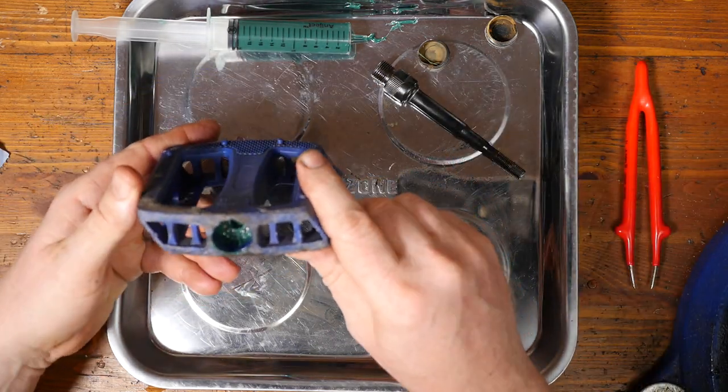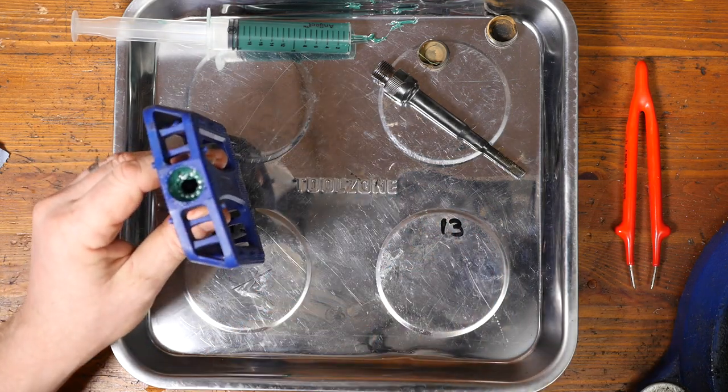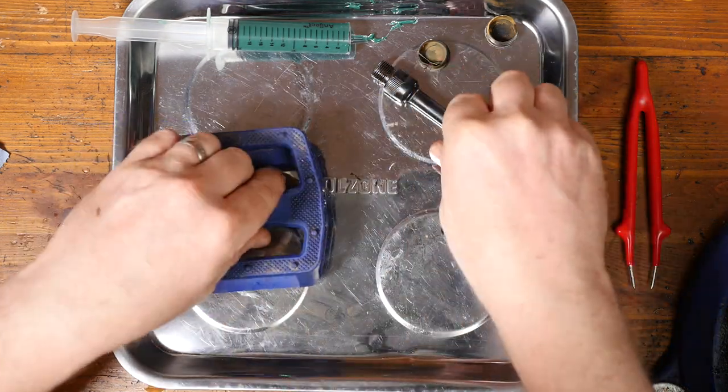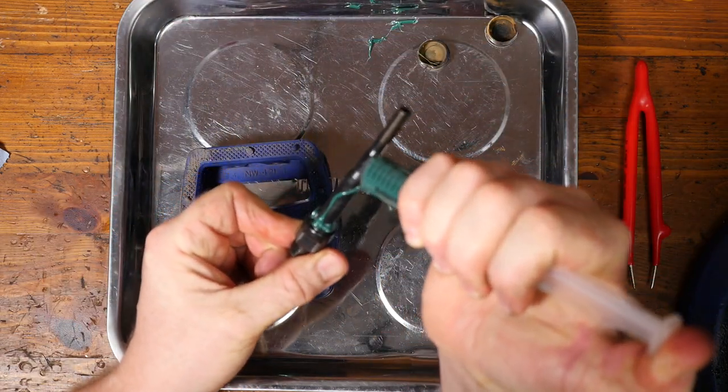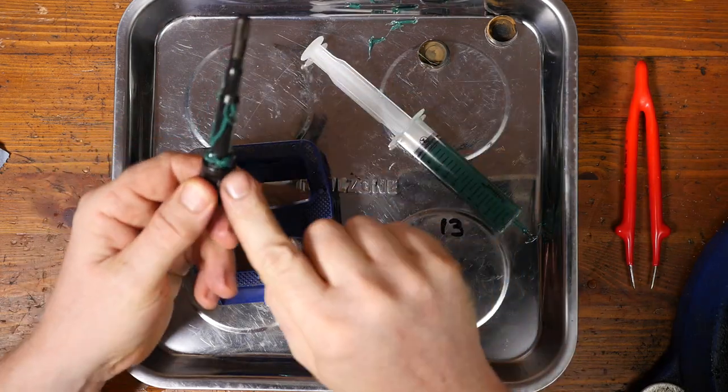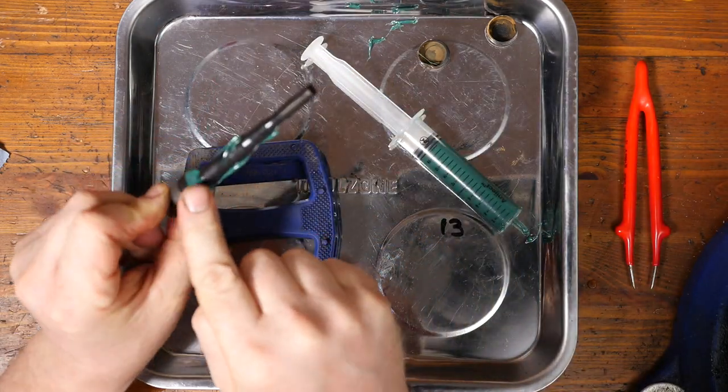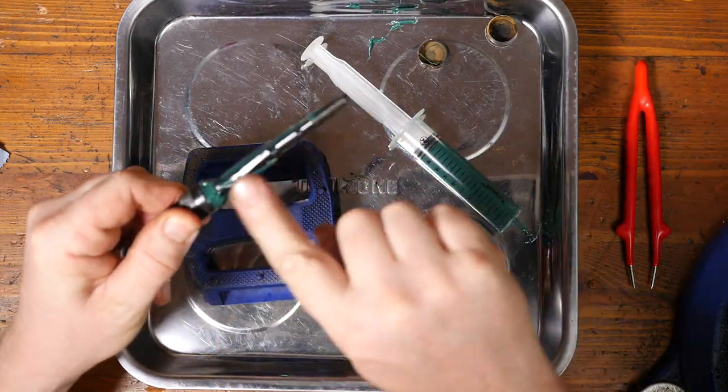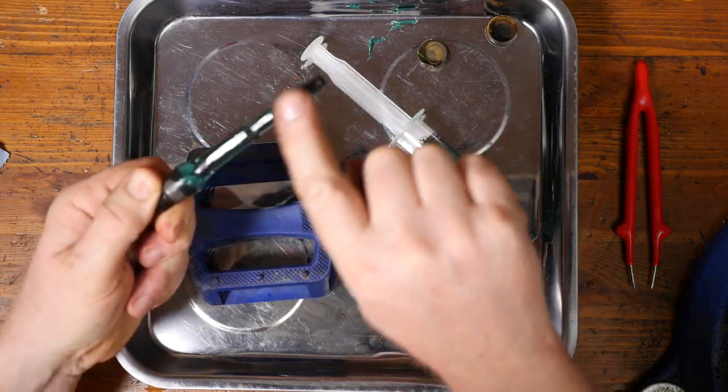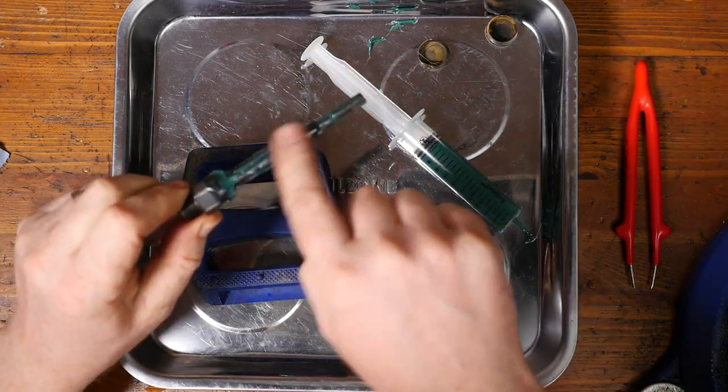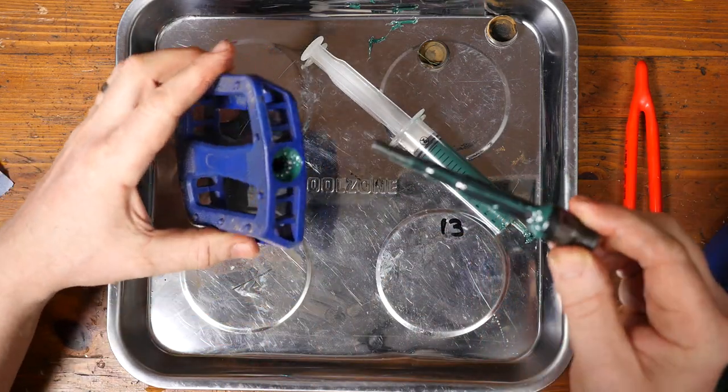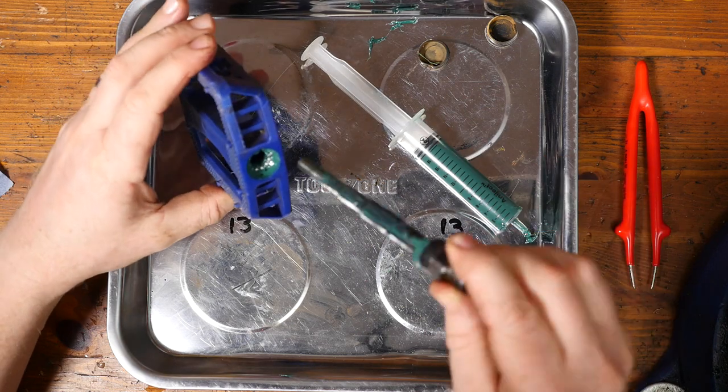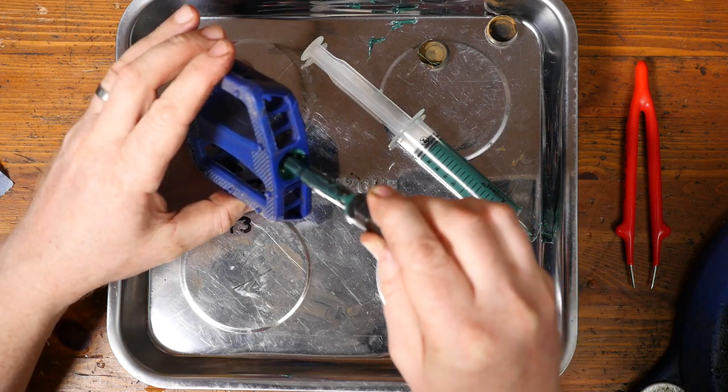So now we can actually manhandle the pedal housing without all the bearings falling out. So we've got an element of safety now. We can add a bit of grease now onto the axle, leave plenty there. And then we just push this through carefully, because again we don't want to dislodge any of the bearings that were in place. So it's worth just being careful.